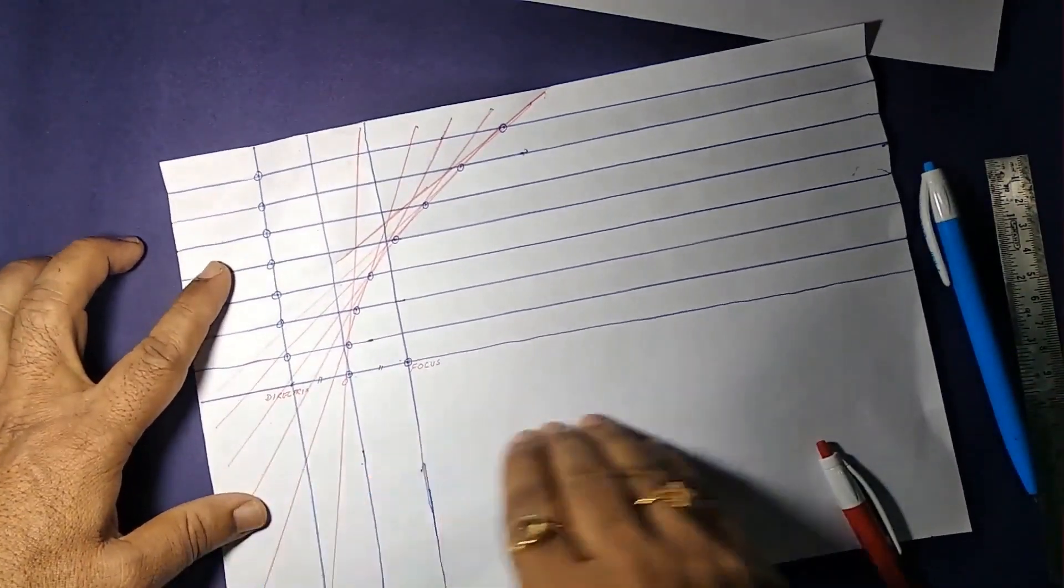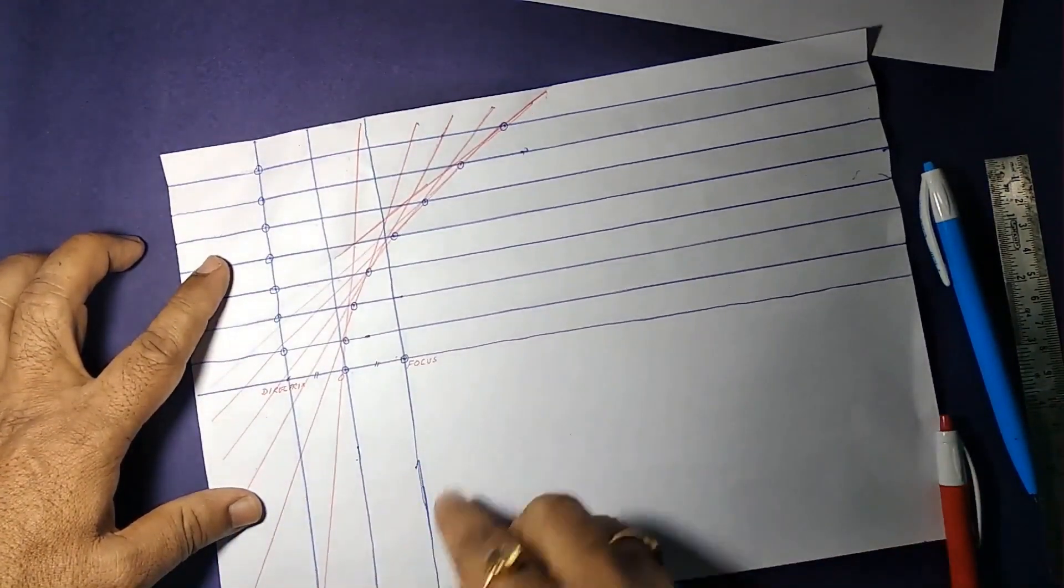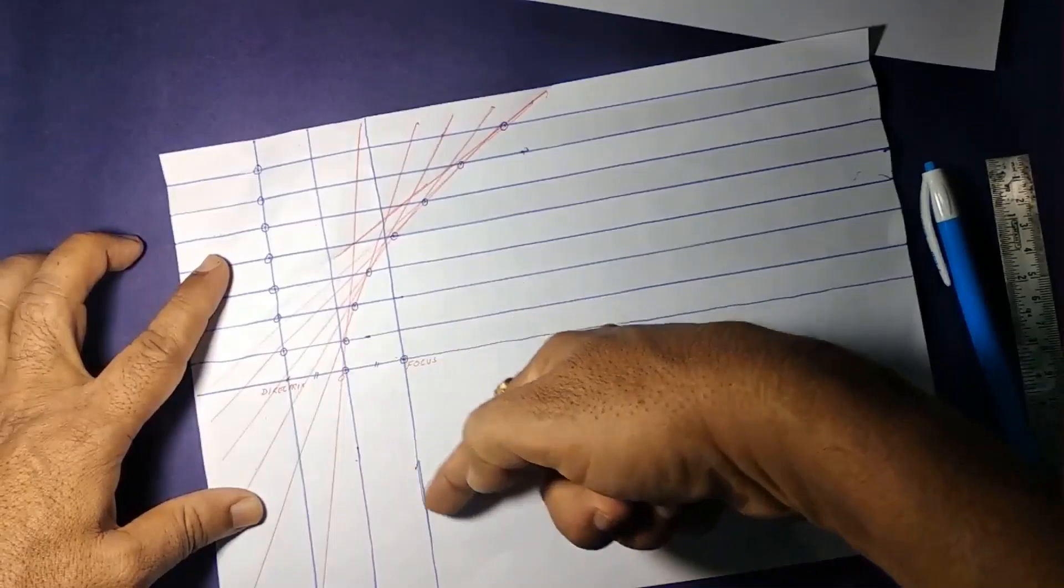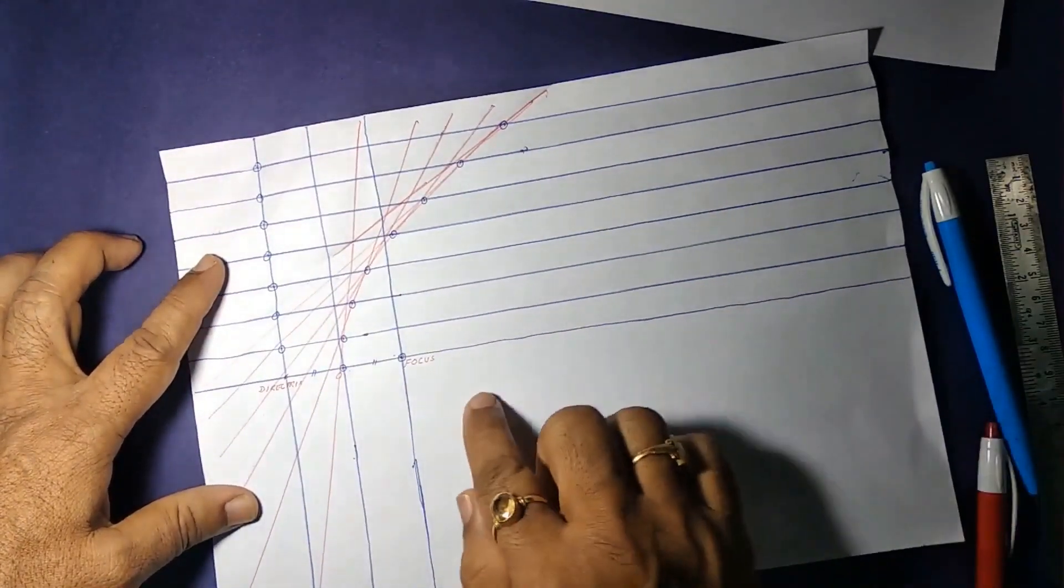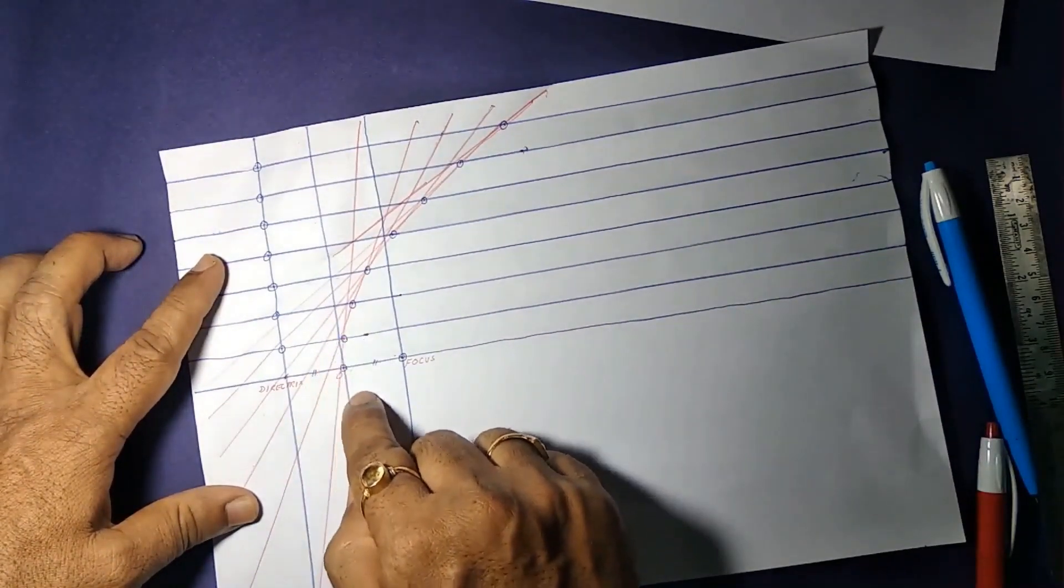For that we can make parallel lines on the bottom also. But in the origami way, let us fold the top part onto the bottom. And make a small pinch over there.